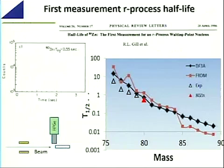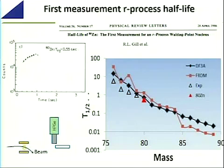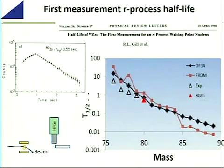Beta decay half-life measurements are a fundamental parameter for r-process models. This was the first measurement of r-process half-lives at RIKEN. To measure half-lives, you implant your beam into a collection point and measure the activity of a gamma line with a germanium detector. You let your activity increase, then deflect the beam away, and let the activity decrease following regular decay rules — plotted on a logarithmic scale of counts versus time.